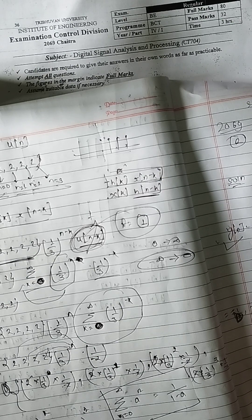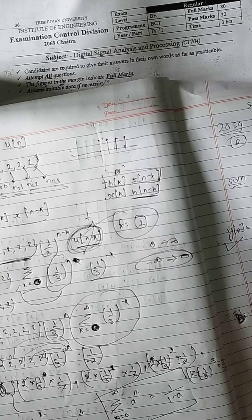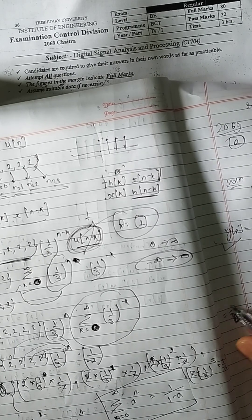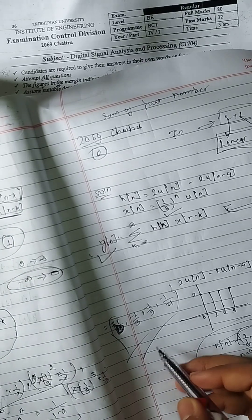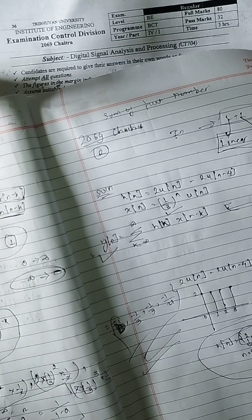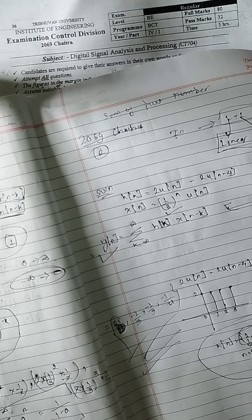The terms are minus 1 upon 3, minus 1 upon 9, minus 1 upon 27, and so on. This is how we can solve this problem. I will solve the next problem in the next video. Keep going, keep practicing. Thanks.